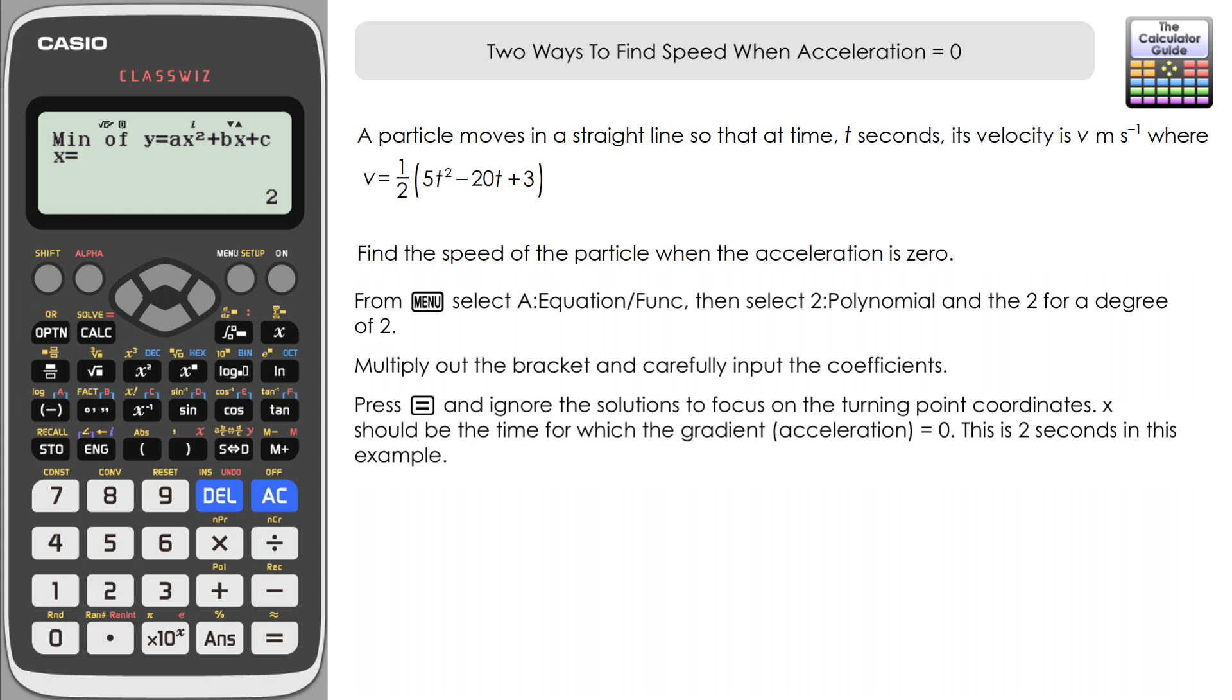And we want to focus on, in this case, the minimum value at the turning point. At the turning point, the gradient of the slope will be zero, which means that's the point we're looking at where the derivative is equal to zero, hence the acceleration is equal to zero. So this is going to be exactly relevant to what we're looking for here. So you notice how the x here is 2, that's our 2 seconds from before. And if we press equals again.